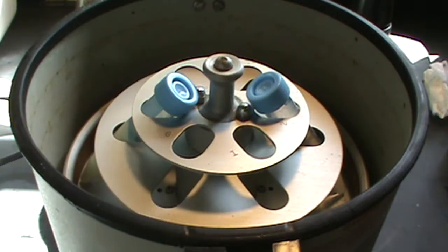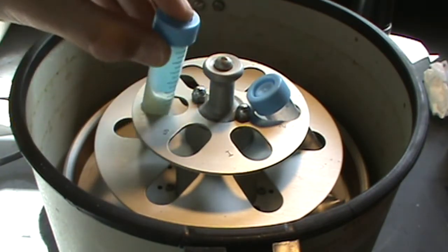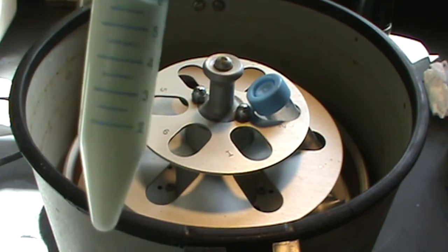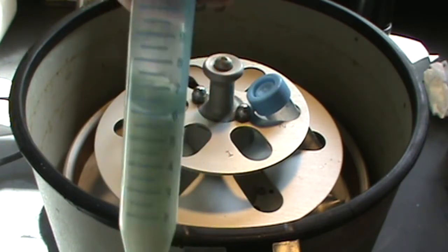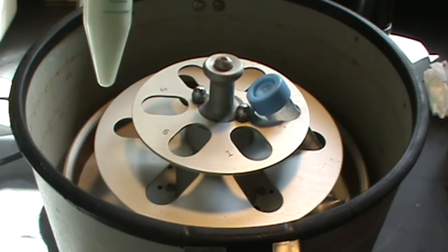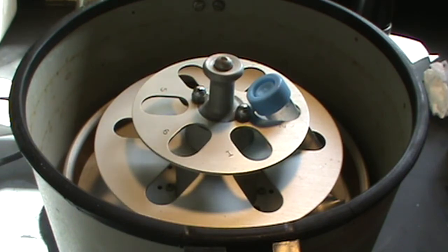The supernatant solution is pipetted off, replaced with distilled water, shaken thoroughly, and then returned to the centrifuge. This process is repeated three times to wash the precipitate.